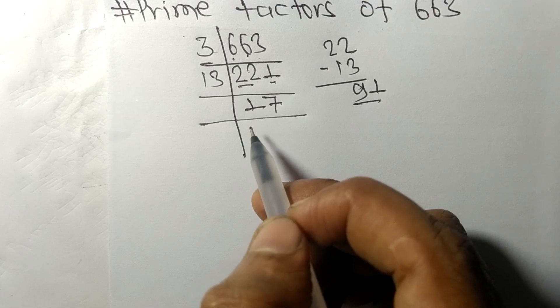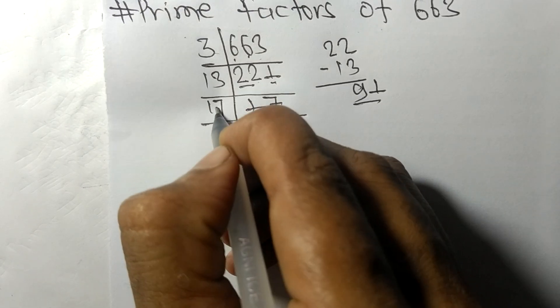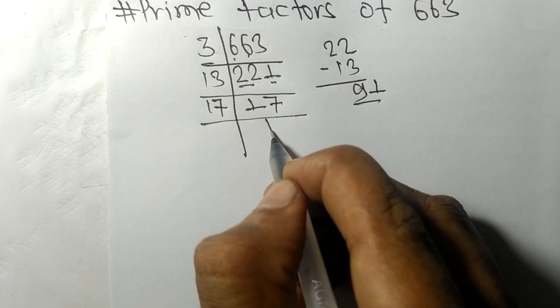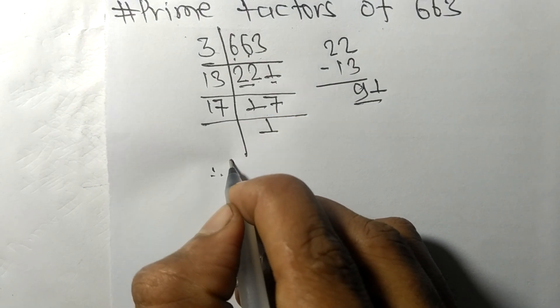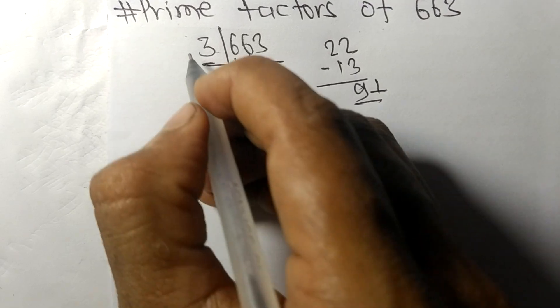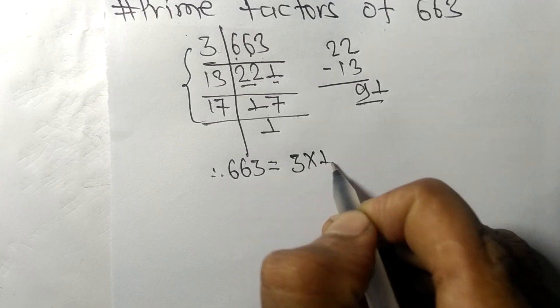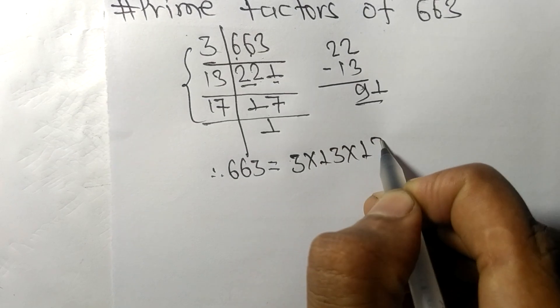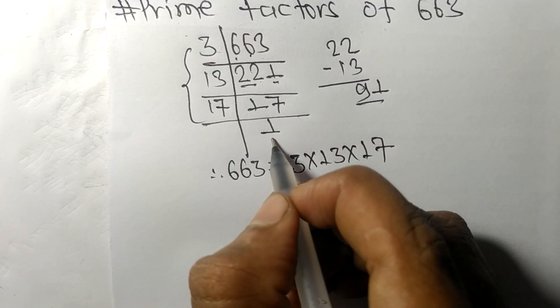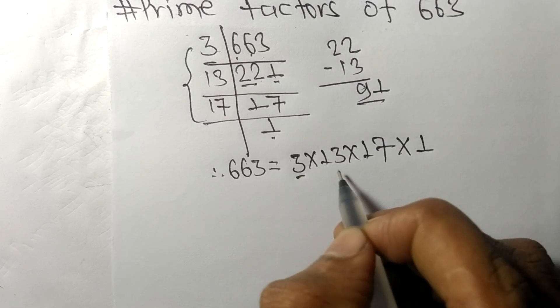Now 17 is a prime number, so it is divisible by 17 itself and we get here 1. Therefore, 663 is equal to, from this side, 3 times 13 times 17, and from here it is 1.